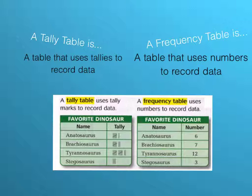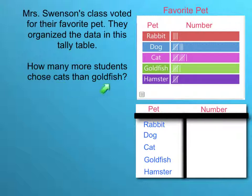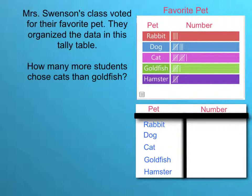Now that we know what those are, let's get to creating them. In this question it says Miss Swinson's class voted for their favorite pet. They organized the data in this tally table right here. How many more students chose cats than goldfish? Well, this is the tally table that we're given. Here's the title — Favorite Pet. Here's the column where it lists the pets, and here's the column where it lists the number of people who chose that pet.